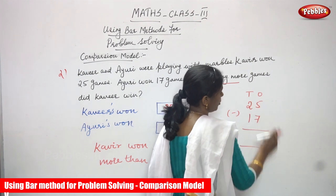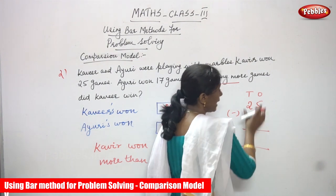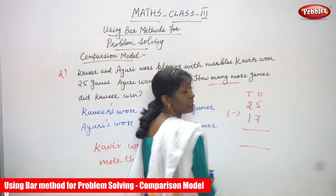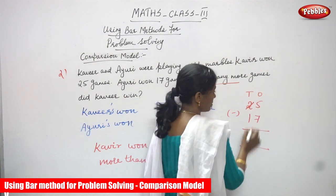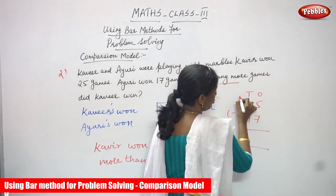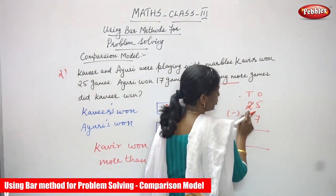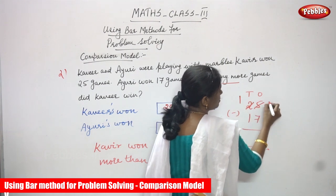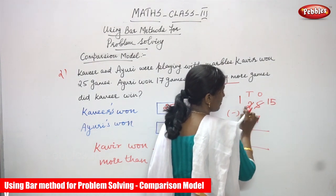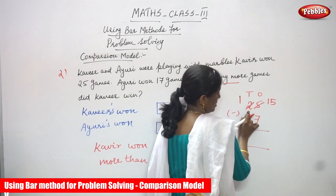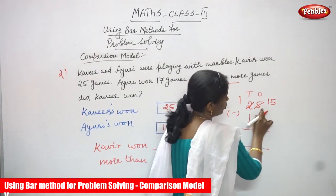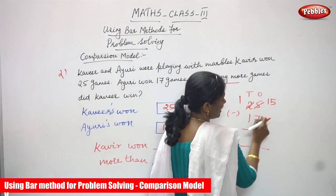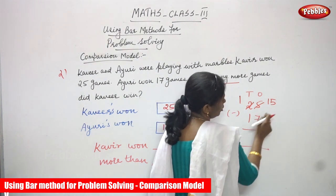We write 25 and 17 in place value columns. Starting with the ones: 5 minus 7 — 5 is not enough to subtract, so I borrow from the tens place. The 2 tens become 1 ten, and the 5 ones become 15 ones (10 + 5), because I borrowed 1 ten.